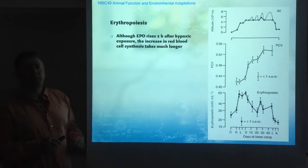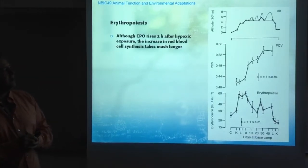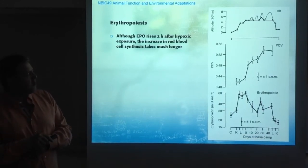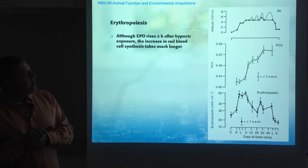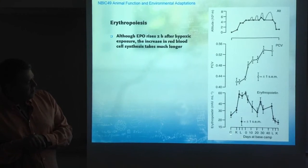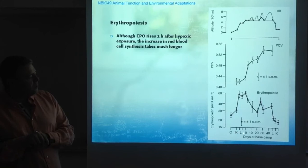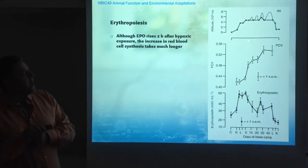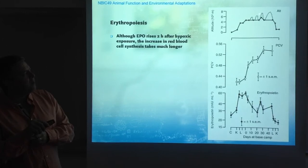The process of erythropoiesis is illustrated in data from an earlier expedition to Everest, showing the altitude profile across different days — from home through Kathmandu and Lhasa, into base camp, with acclimation climbs and return to base camp before the summit attempt. The PCV, or hematocrit, increases as a result of erythropoiesis, from 42% — a normal sea level value — up to 54%.